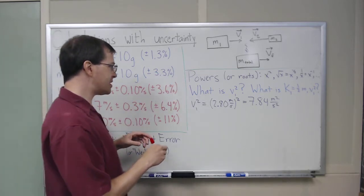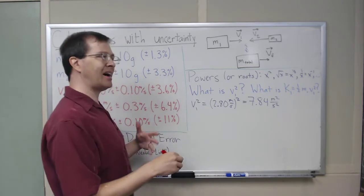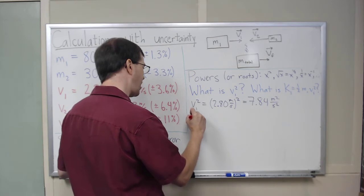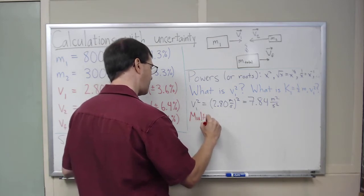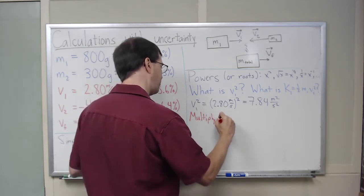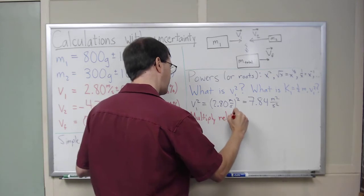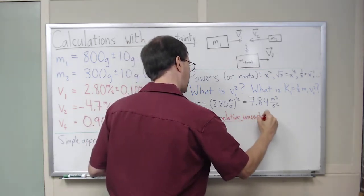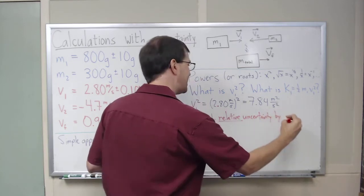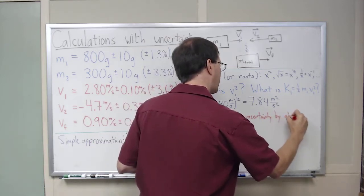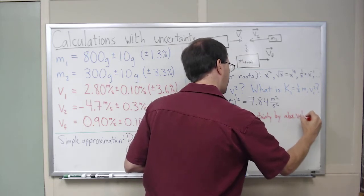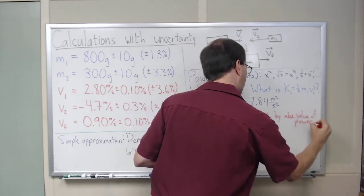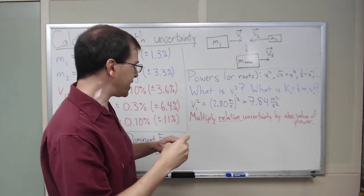So the rule for powers of quantities is that for any power, this is some V1 to the second power, the rule is multiply the relative uncertainty by the absolute value of the power. That's the rule.